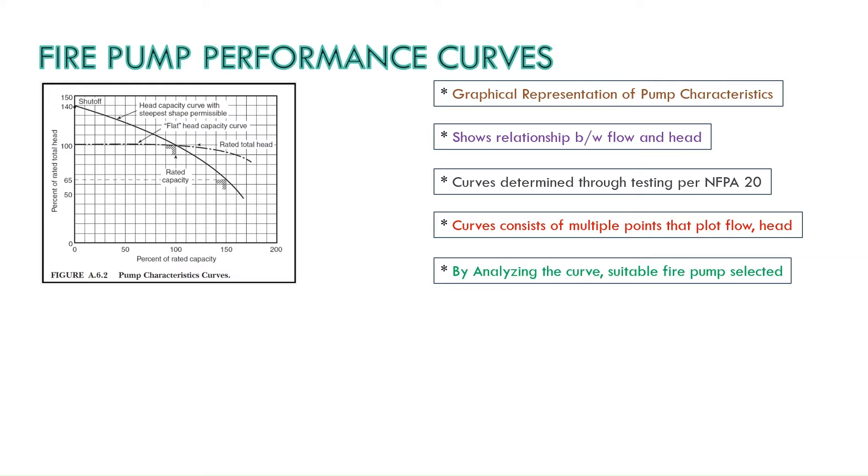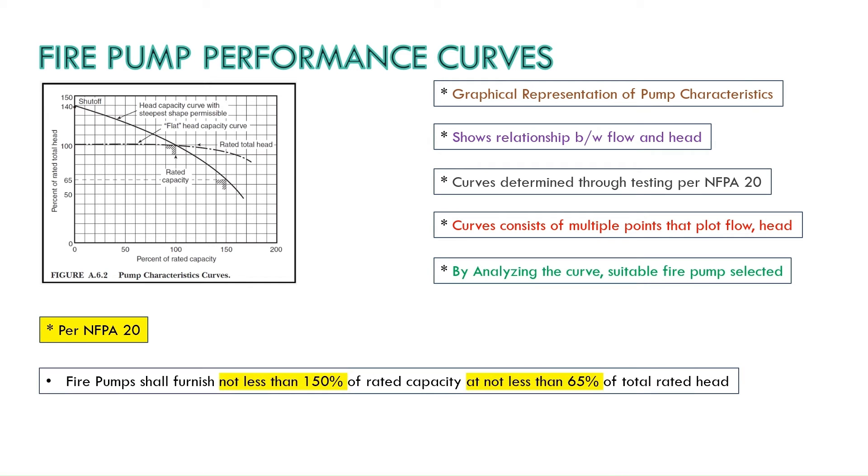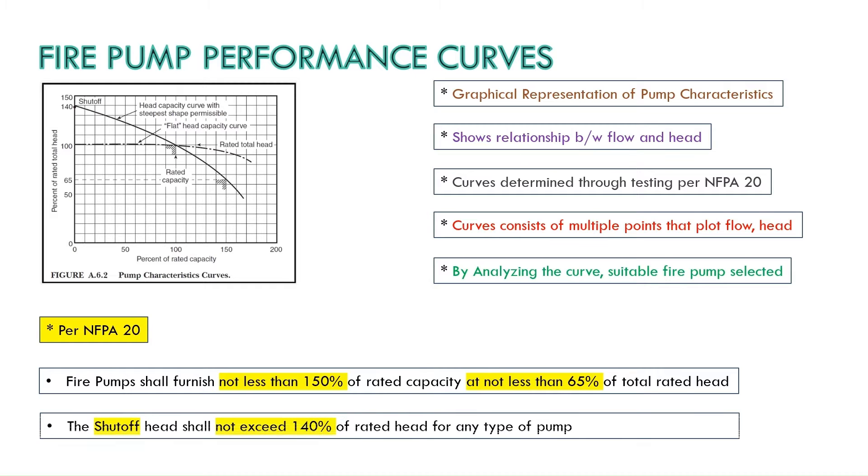Apart from this there are two most important points which are stated in NFPA 20. You need to make sure you are able to remember these two particular points since these are the deciding factors to select a fire pump. The first most important point is that the fire pumps shall furnish not less than 150% of rated capacity at not less than 65% of total rated head. And the second point is the shutoff head shall not exceed 140% of rated head for any type of pump.